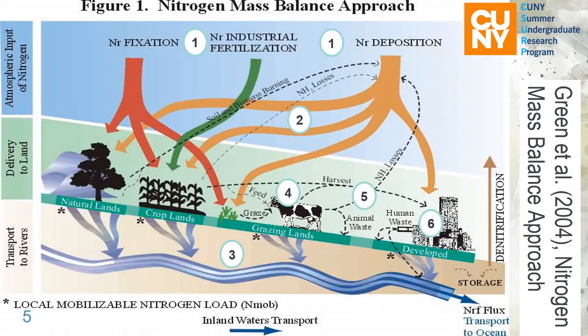This research is based on a paper called Pre-Industrial and Contemporary Fluxes of Nitrogen — a global assessment. This image is taken from there and it shows the overview of nitrogen transportation among atmosphere, land, and ocean.